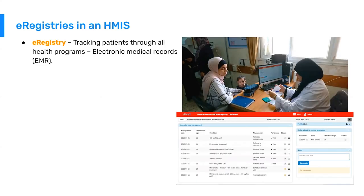The last point about data types in the HMIS is e-registries. E-registries are more akin to electronic medical records, where you slightly disconnect a patient from all of the health programs and look at the patient more holistically. This is a relatively new frontier for DHIS-2, categorized more along the lines of a comprehensive patient registry. A registry is different from electronic medical records — electronic medical records are often captured at point of care during the individual patient-to-clinician interaction, whereas a registry can be captured after point of care, maybe by a data entry clerk, a nurse in charge, or the clinician who received the patient.